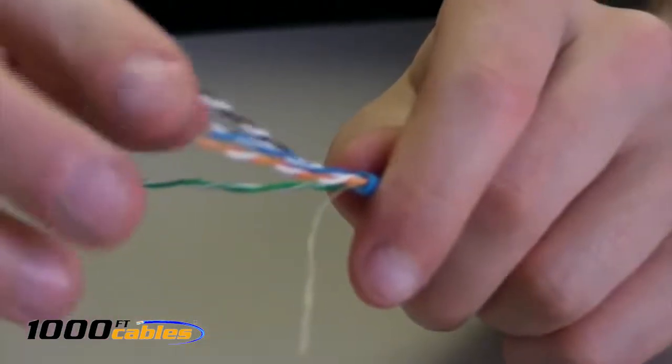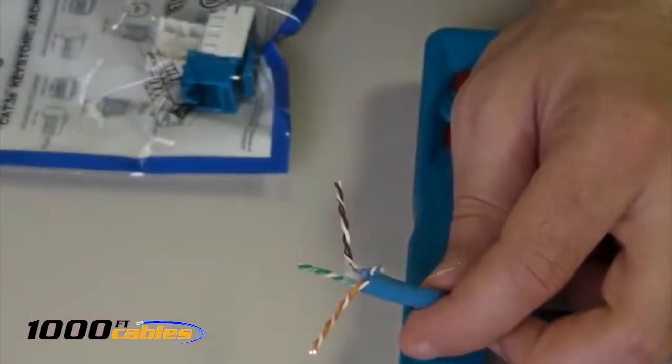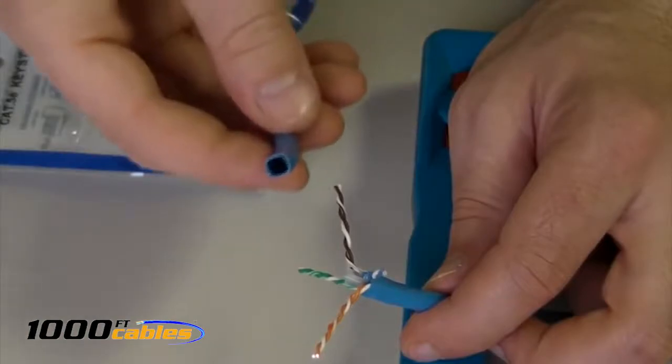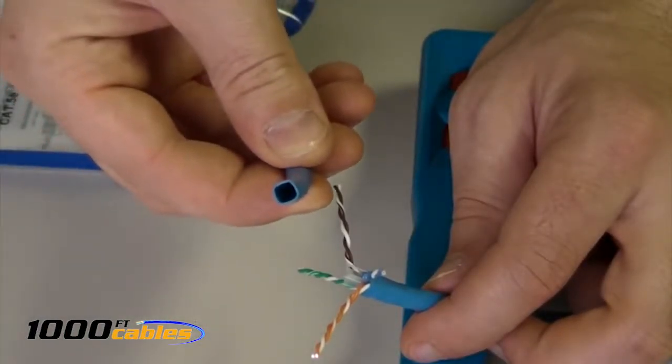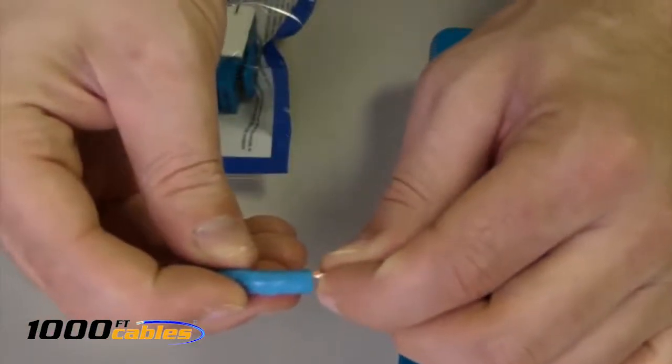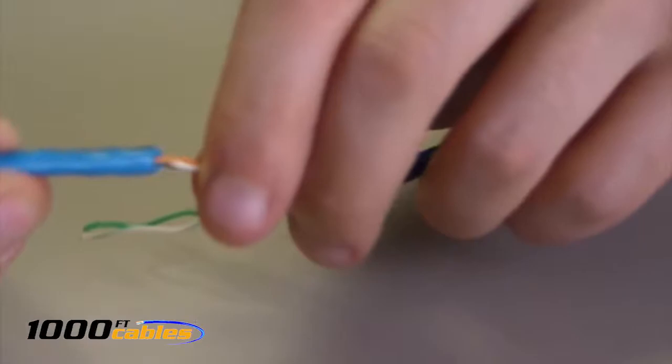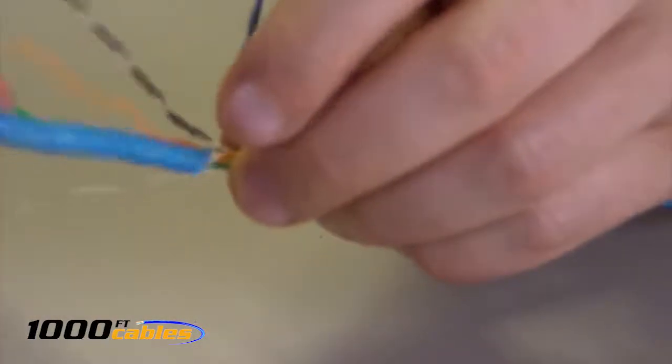Now you can see that we have four pairs of wires. Next, what you want to do is untangle the four pairs of wire. We're going to take our piece of shielding that we got from earlier. You just want to stick it in between the two wires like so and just twist down it. That is an easier way to get the wires separated so you don't hurt your fingers.